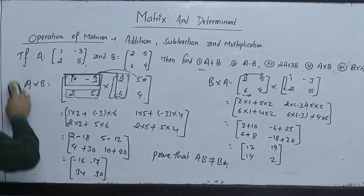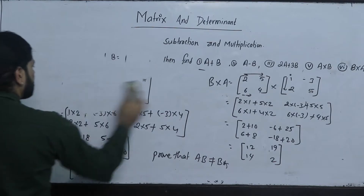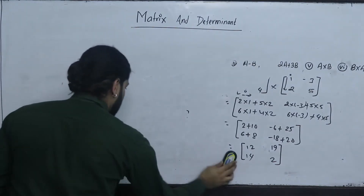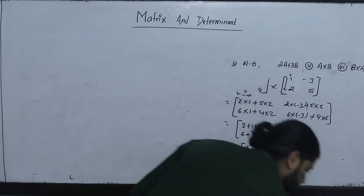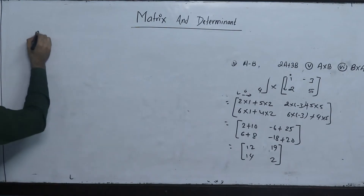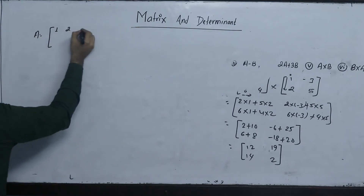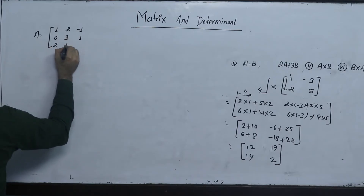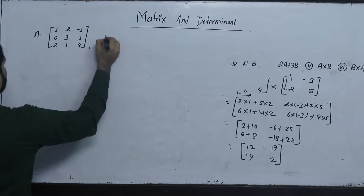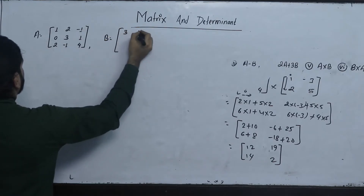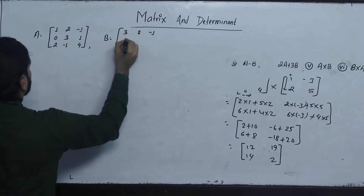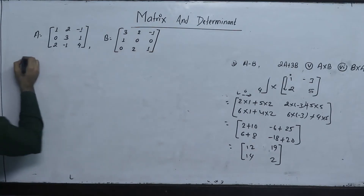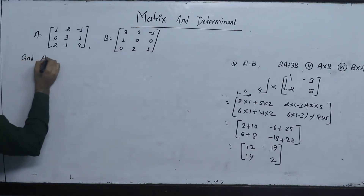Now for a 3×3 example. Matrix A is: 1, 2, minus 1, 0, 3, 1, 2, minus 1, 4. Matrix B is: 3, 2, minus 1, 1, 0, 0, 0, 2, 1. Find A into B.